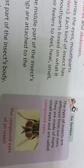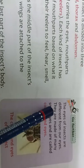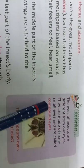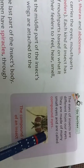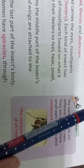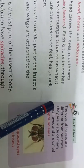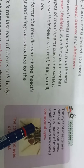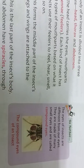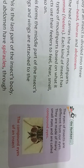The eyes of insects are different from our eyes. They are made of many small eyes and are called compound eyes. We have two eyes, one on each side, but the insect's eyes are made of many small eyes — that is why they are called compound eyes.